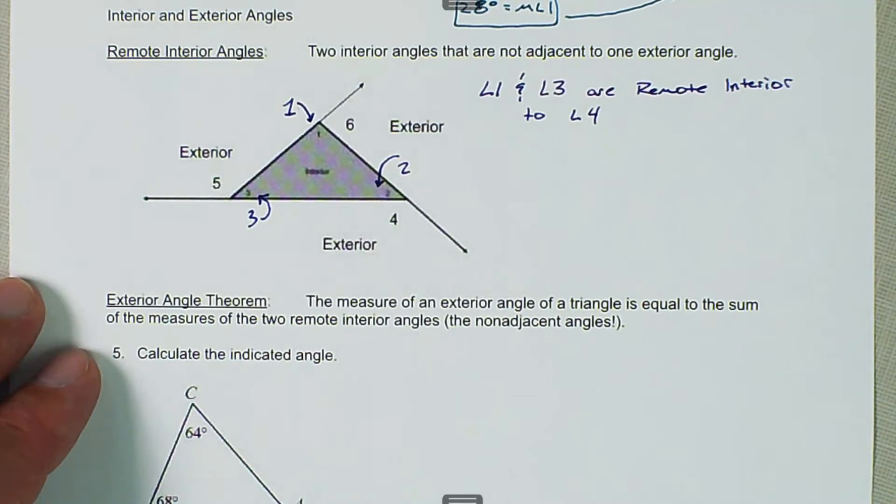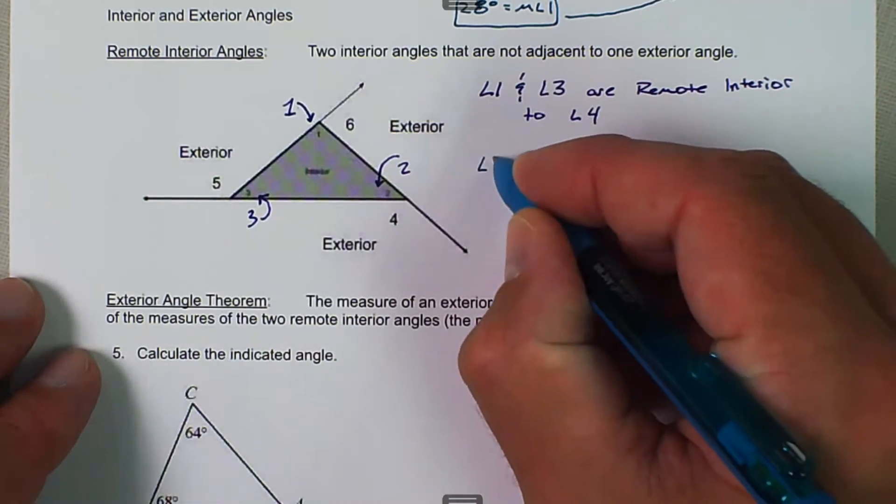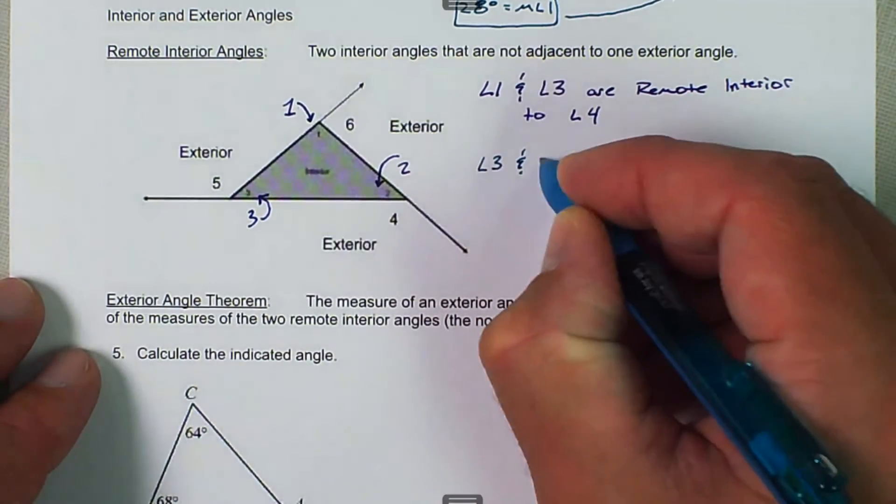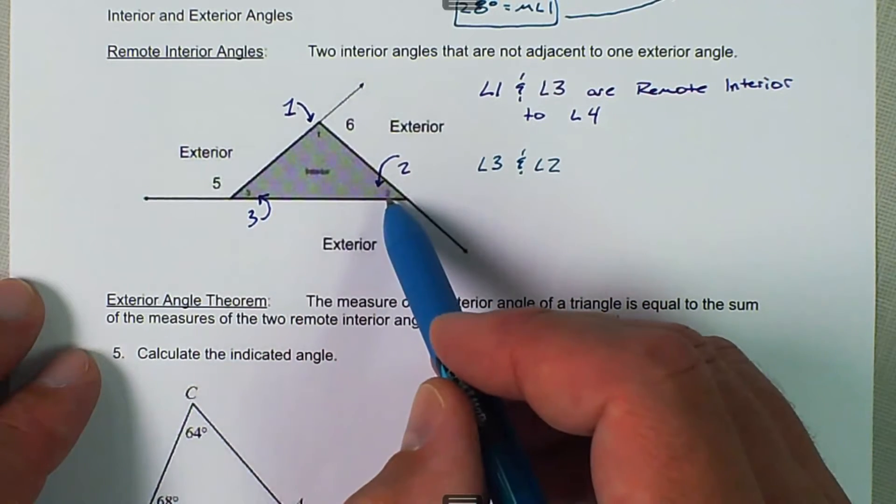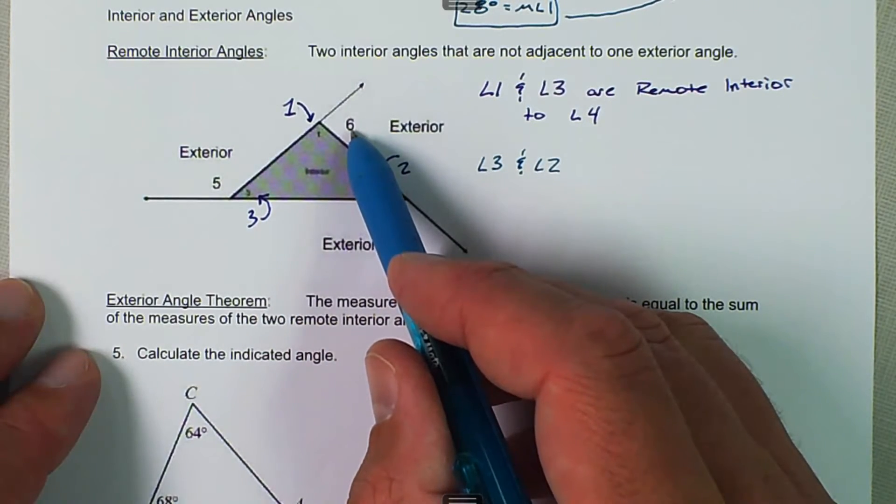Another example that we can do real quick: angle 3 and angle 2. So we have angle 3 and angle 2. The only one that they're not adjacent to is angle 6.